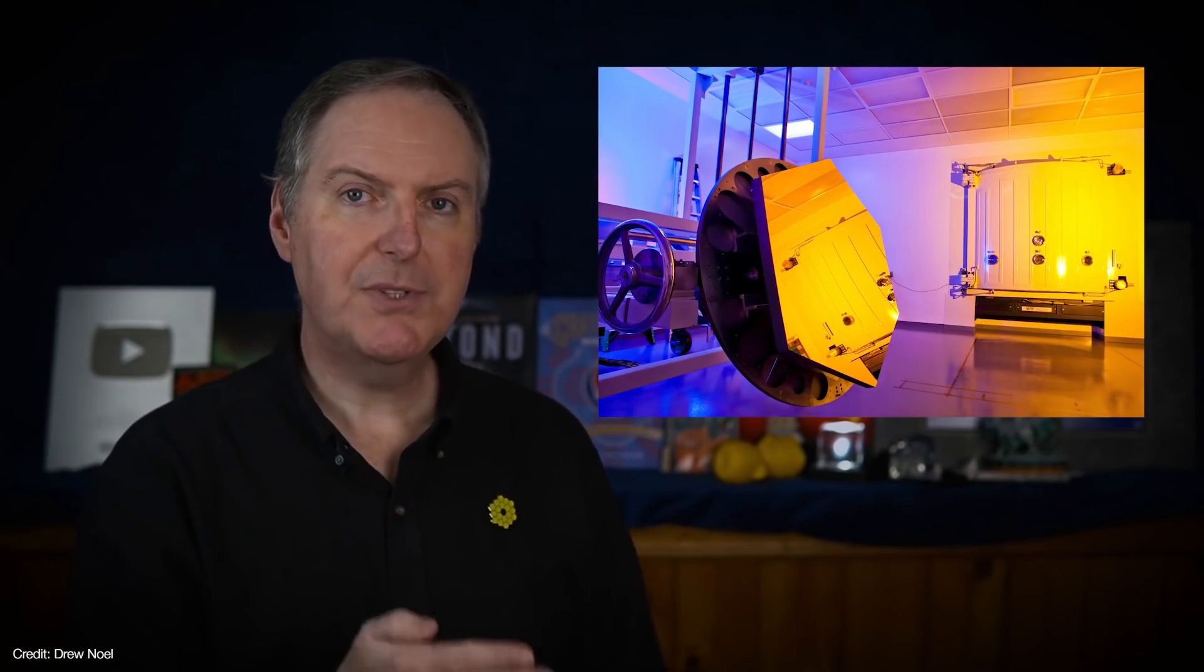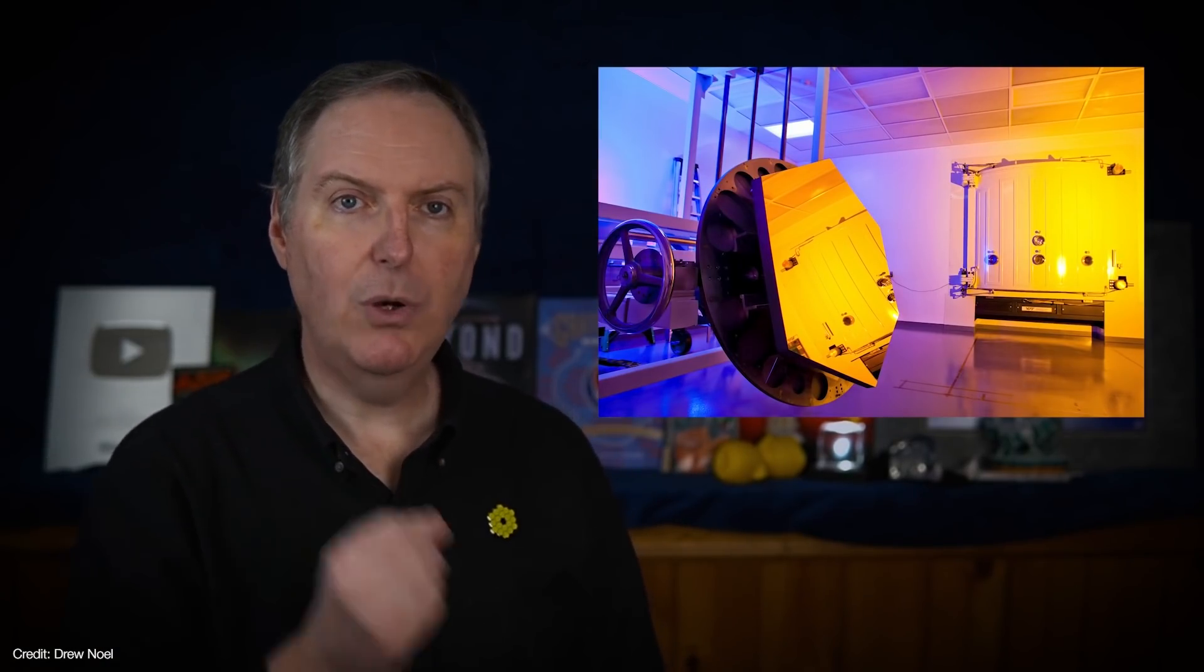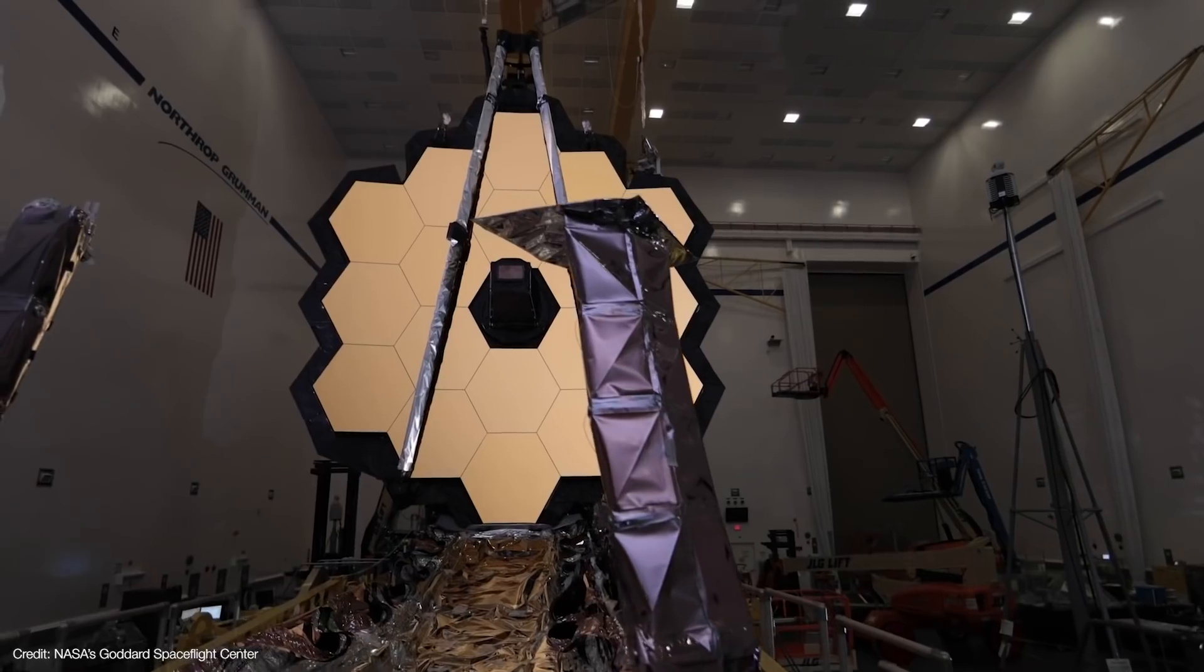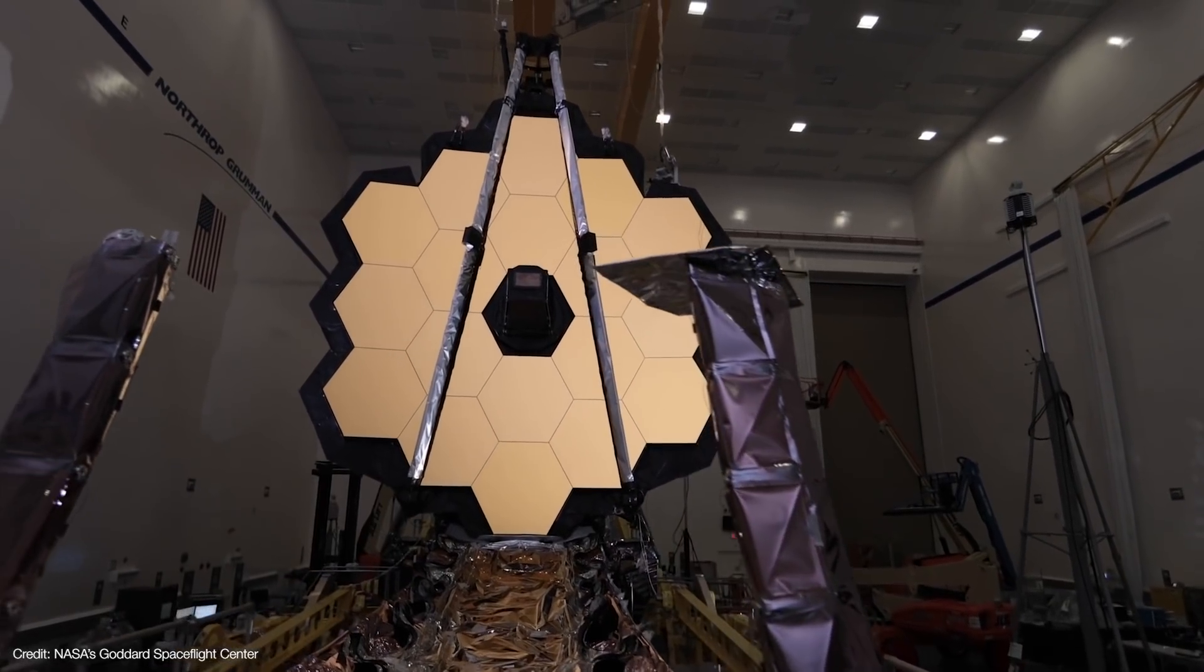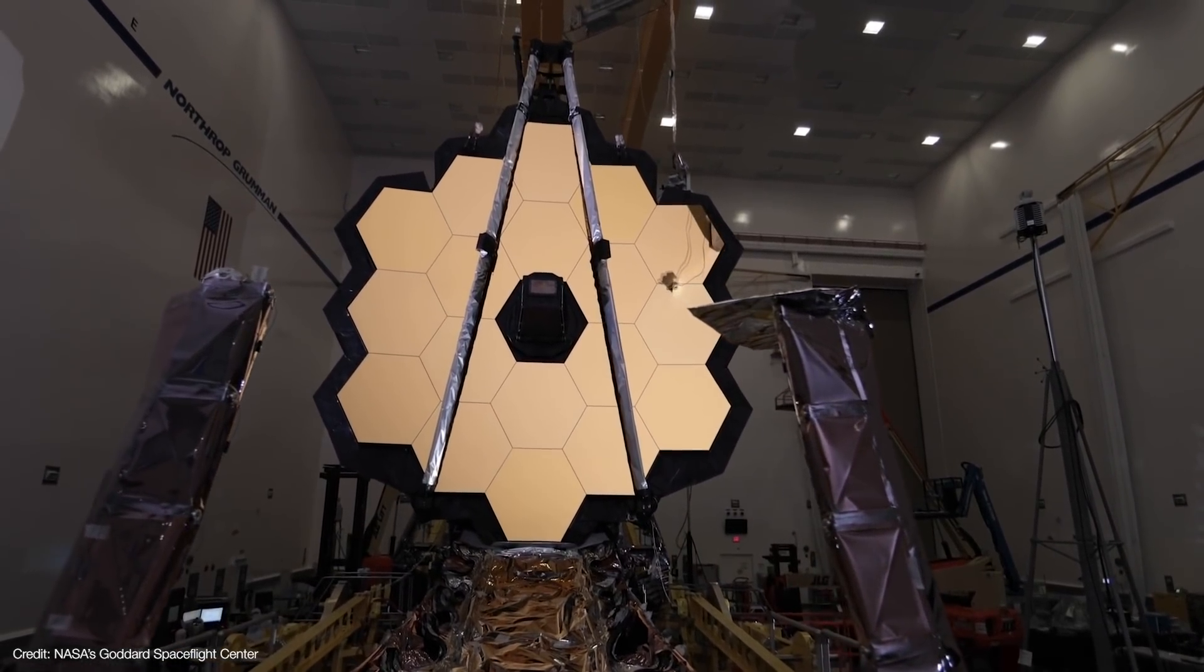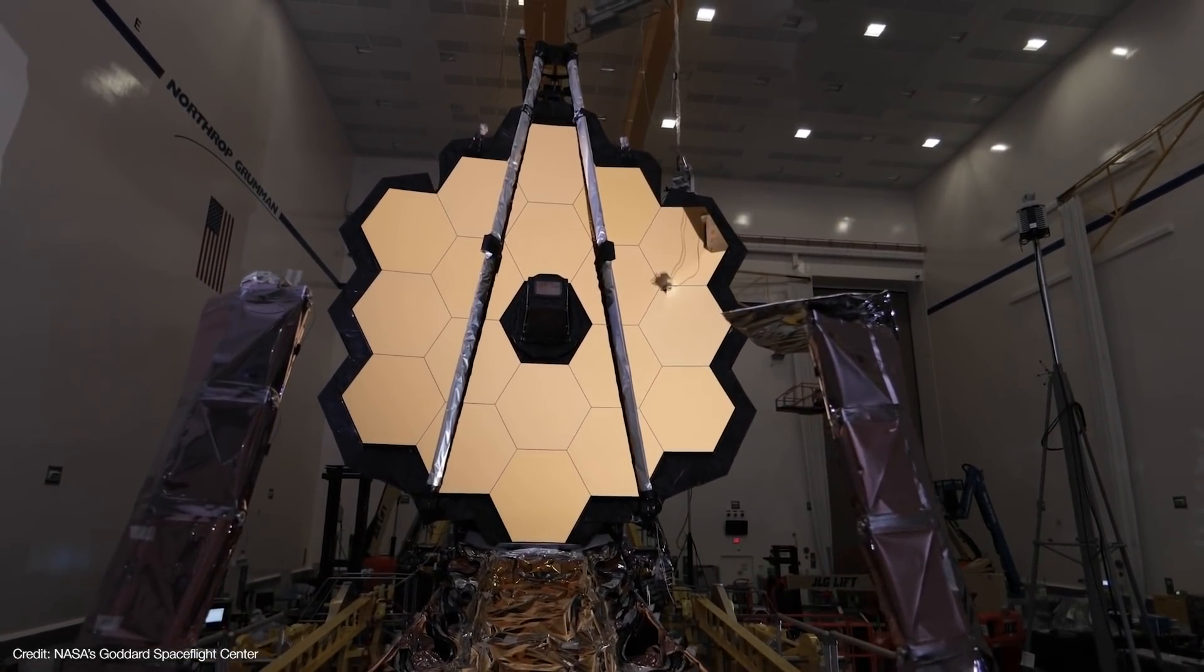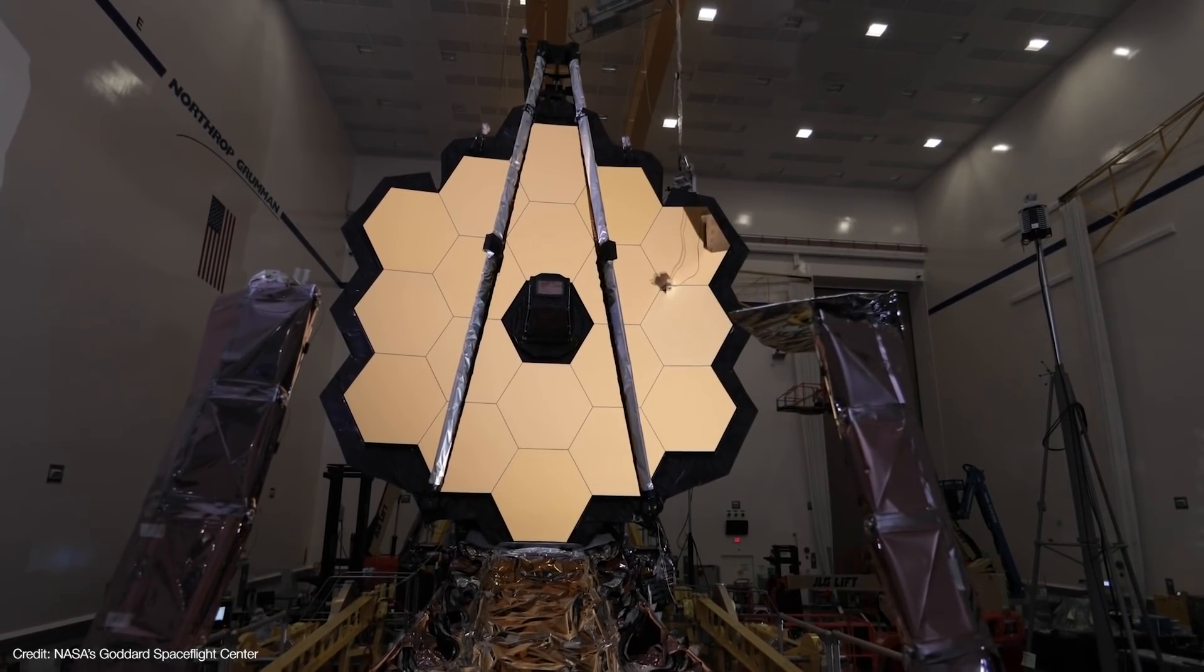And because Webb must reflect infrared light, its mirrors are coated with a thin layer of gold instead of aluminum. And that's because while gold only reflects the longer wavelengths of visible light, it's an almost perfect reflector in the mid-infrared. And then of course there's the requirement to fold up the mirrors ahead of launch.